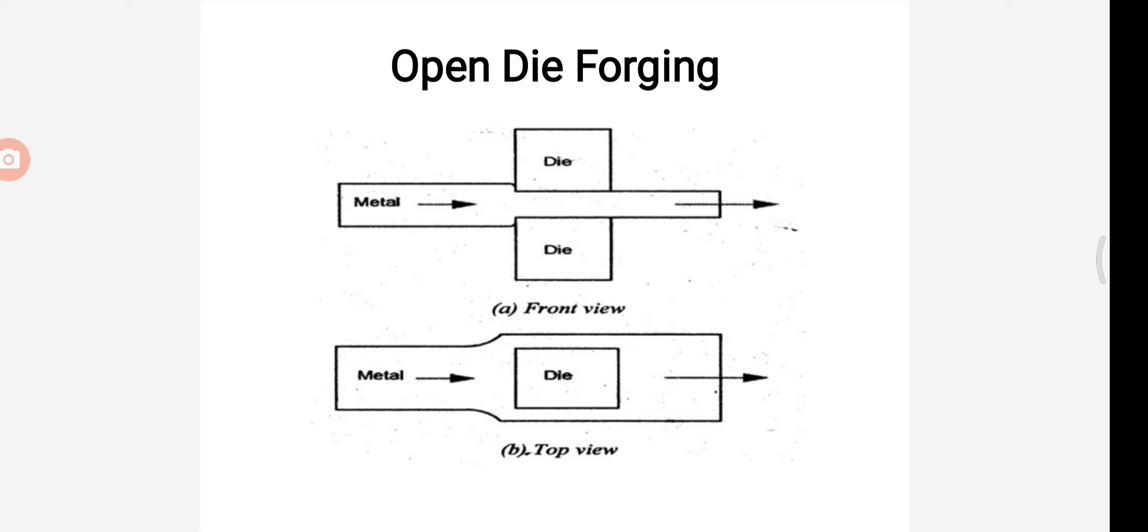In this video, we are going to see about forging process. Forging process is the process of mechanical working of metals. In this process, the desired shape is obtained by the application of a compressive force. In hot forging, the metal is heated above the recrystallization temperature. Then it is compressed and squeezed to the required shape by using a hammer or press tools. This is known as the forging process.